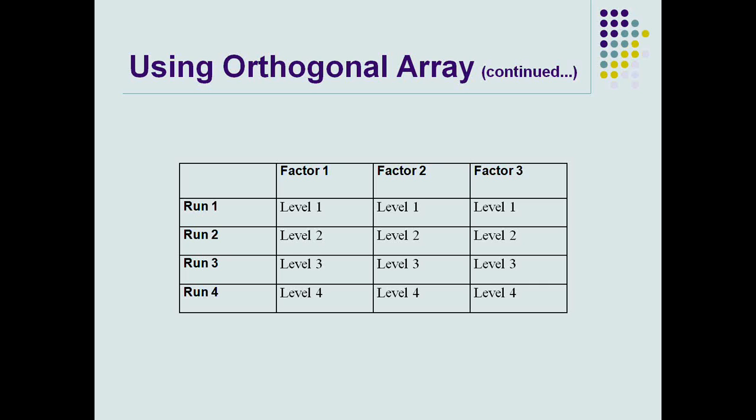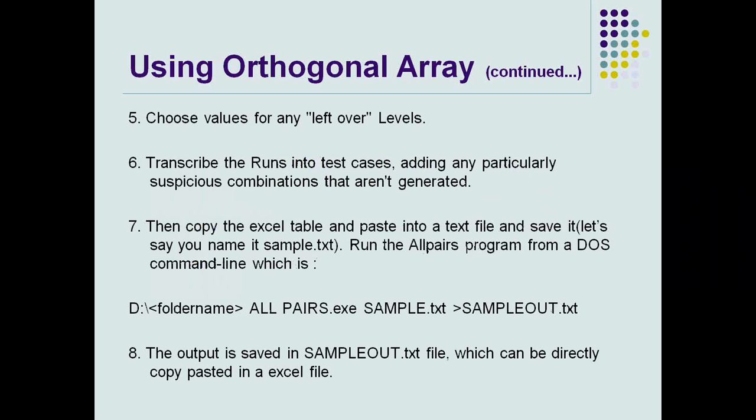So here, we have the factors — which are the columns — and we have the levels, which hold the values. For example, in testing a report, you have various variables and a filter criteria. The level maps to the filter value, and the factor maps to the attribute. Each combination of factor and level corresponds to a run, which represents one test scenario or test condition. You also choose the values of any leftover levels, then copy all this into a sample text file.